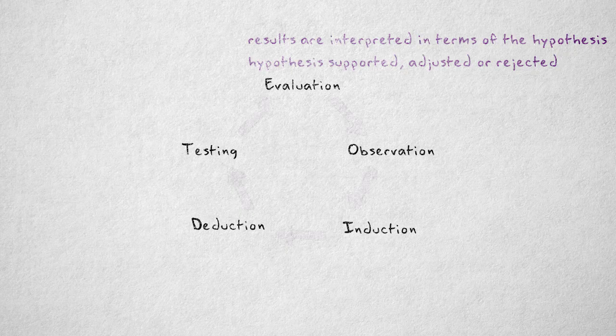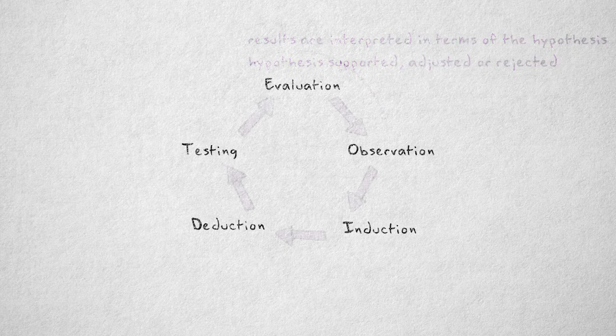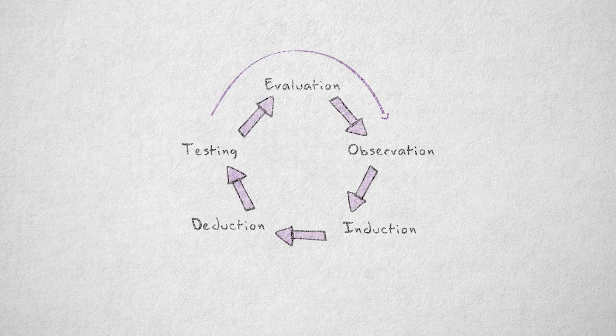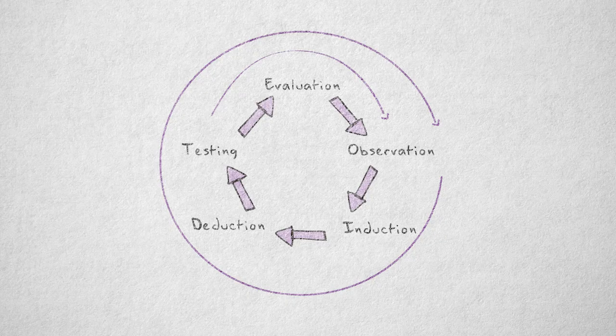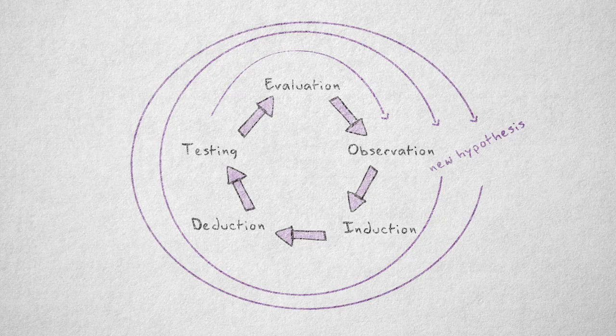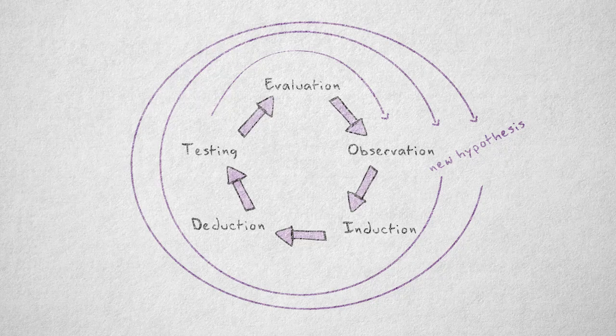The observations collected in the testing phase can serve as new, specific observations in the observation phase. This is why the process is described as a cycle. New empirical data obtained in the testing phase give rise to new insights that lead to a new run-through. And that's what empirical science comes down to.